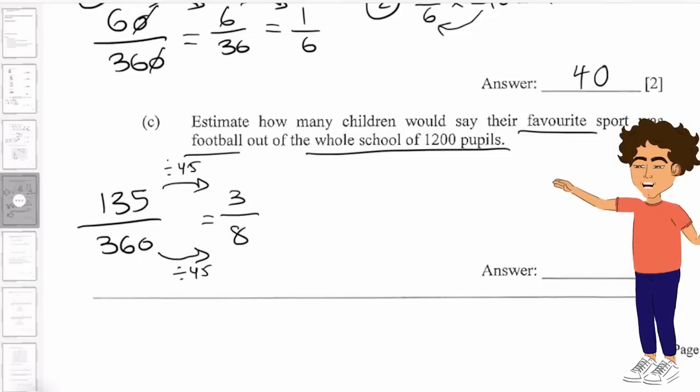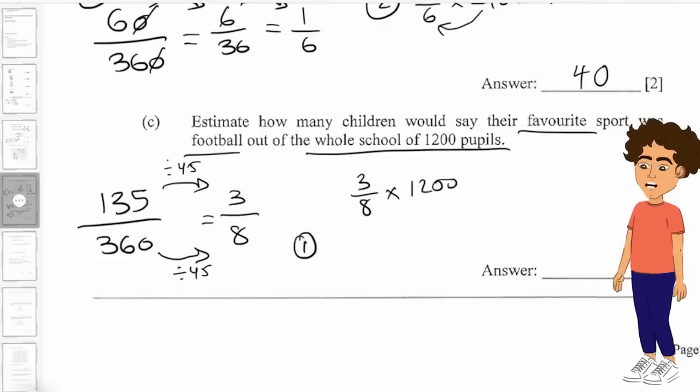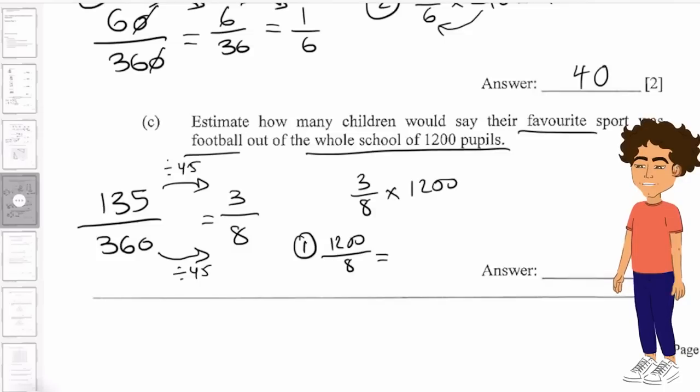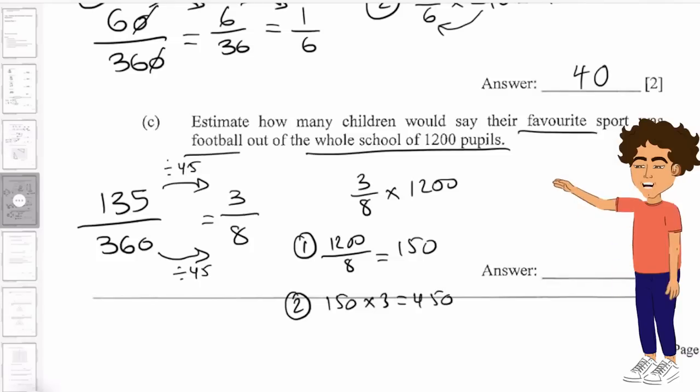And then we are going to go ahead and have 3 over 8 times by 1200. Step one, 1200 divided by 8, which then gives you 150. And step two, we'll go ahead and take 150 and times that by 3, which gives us 450. And that is our answer.